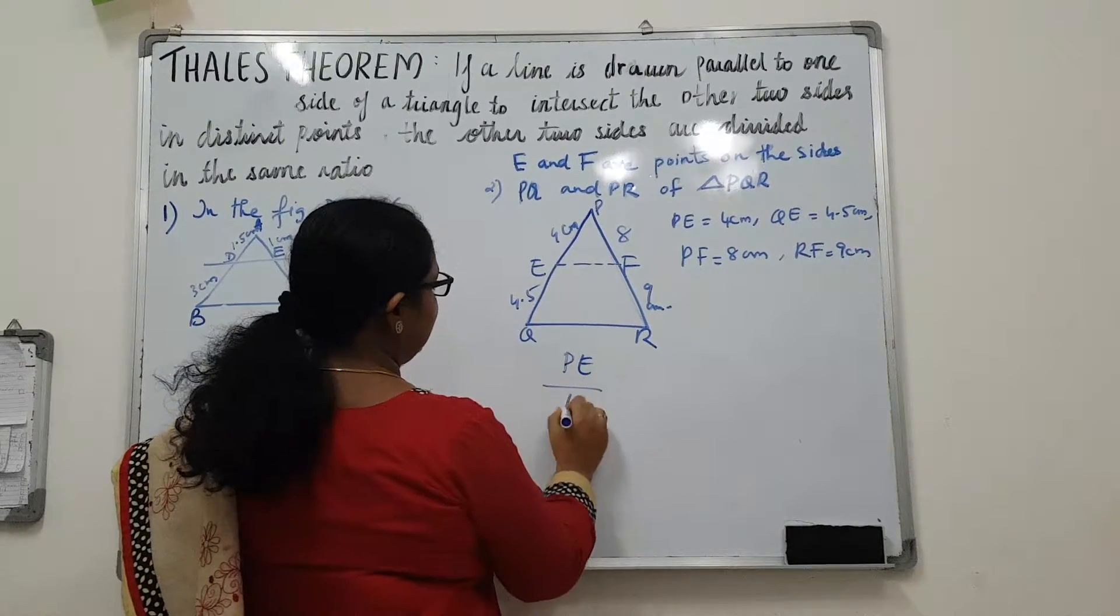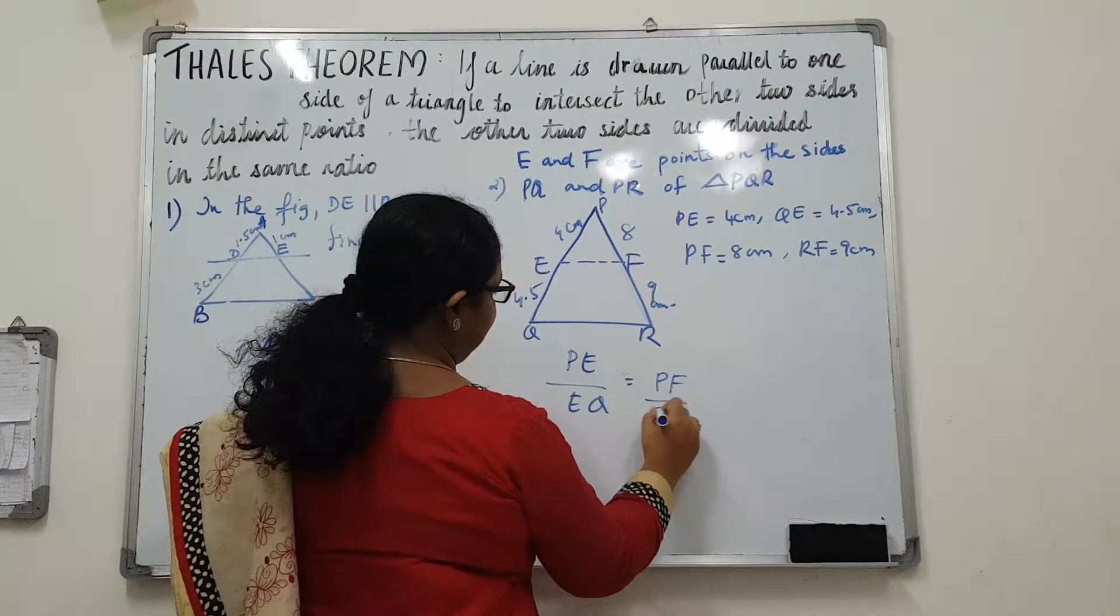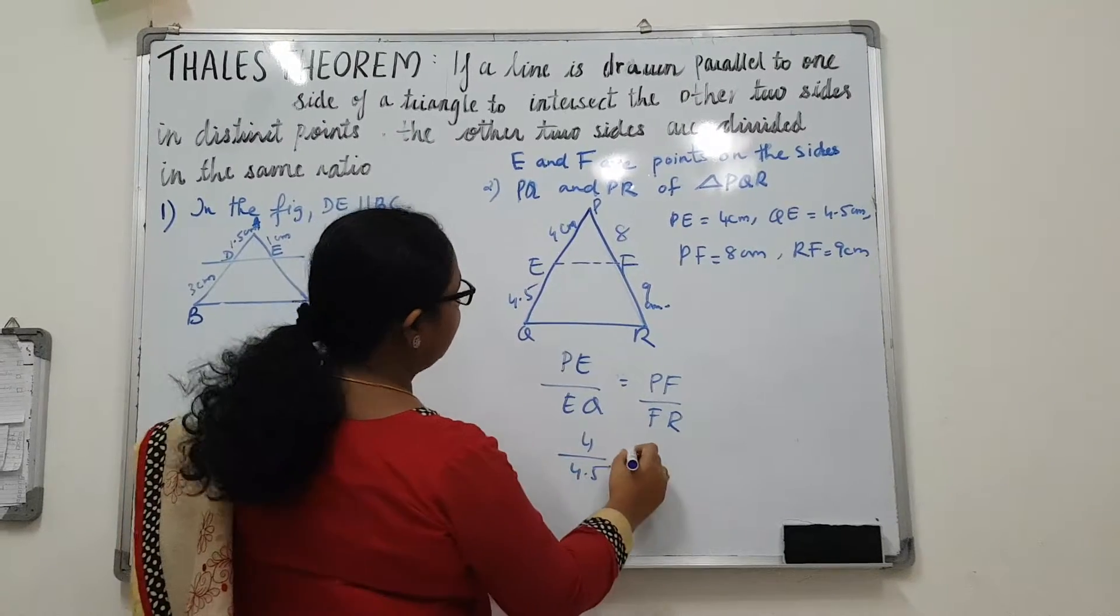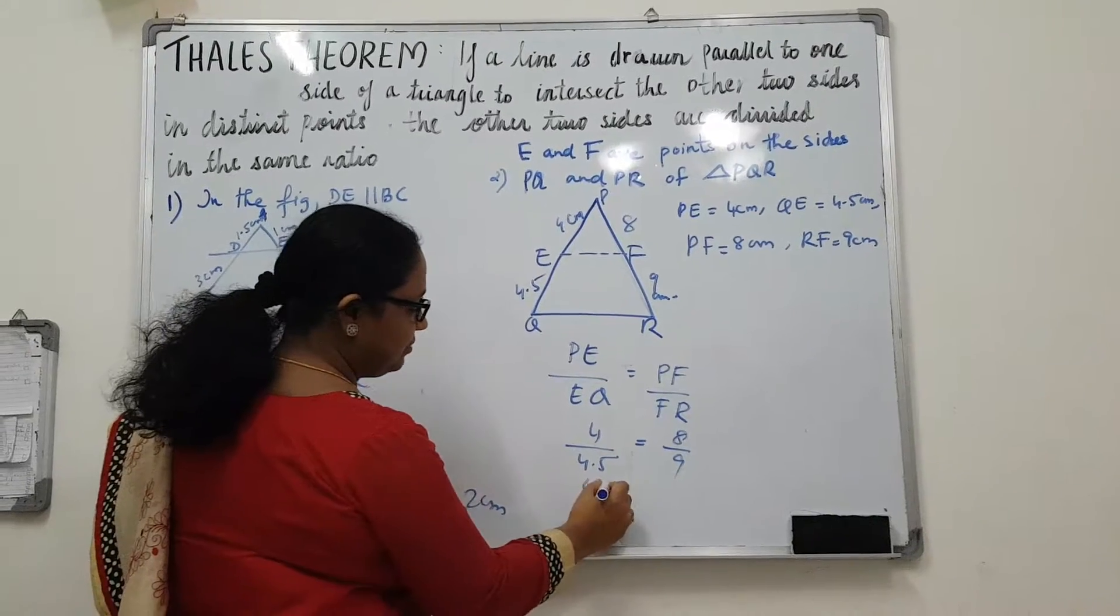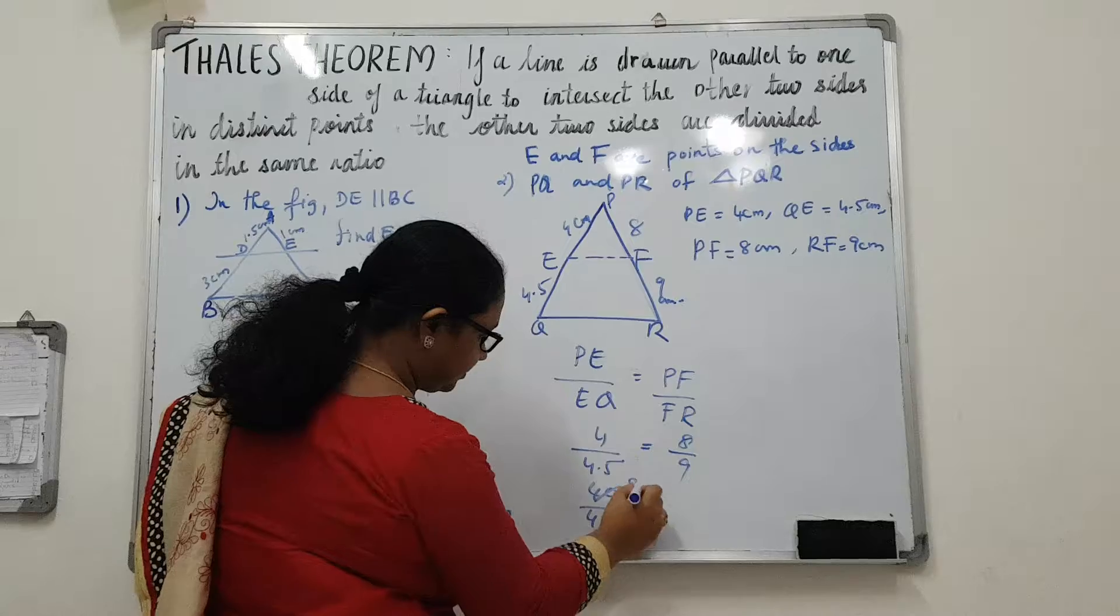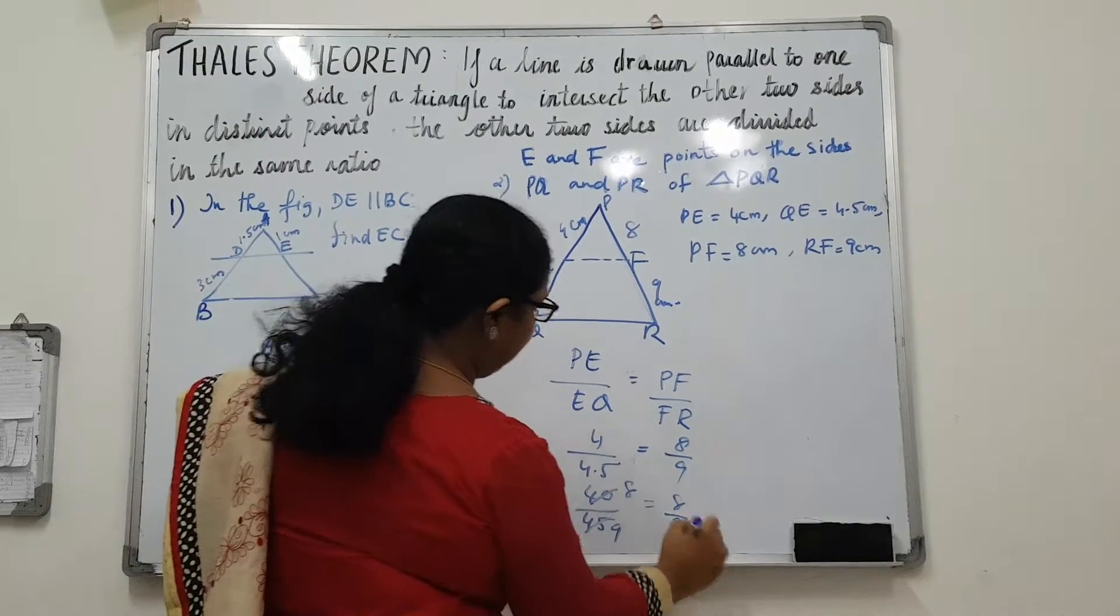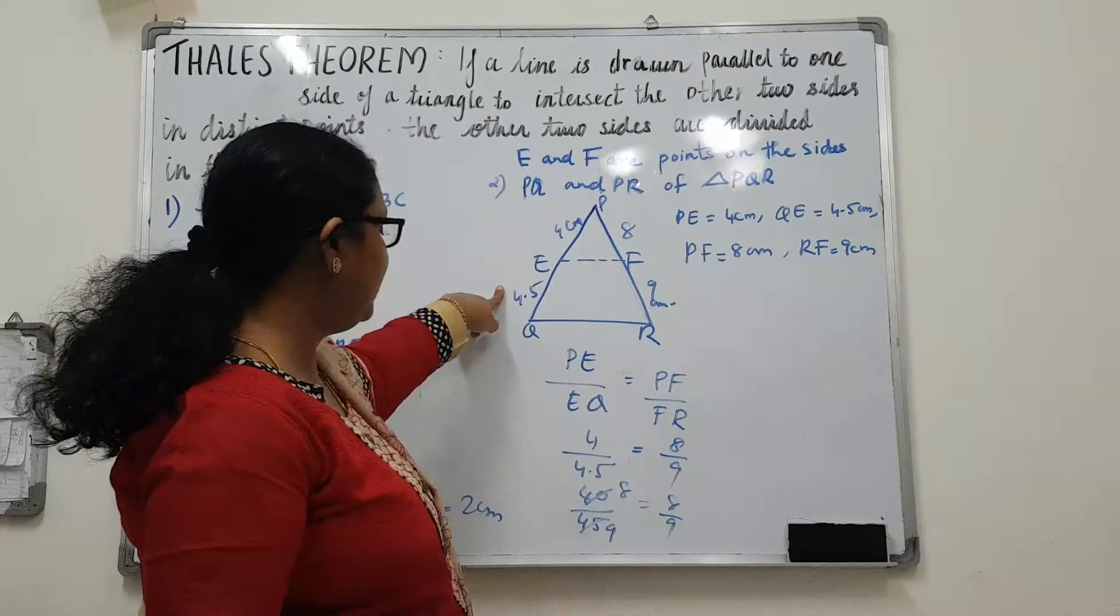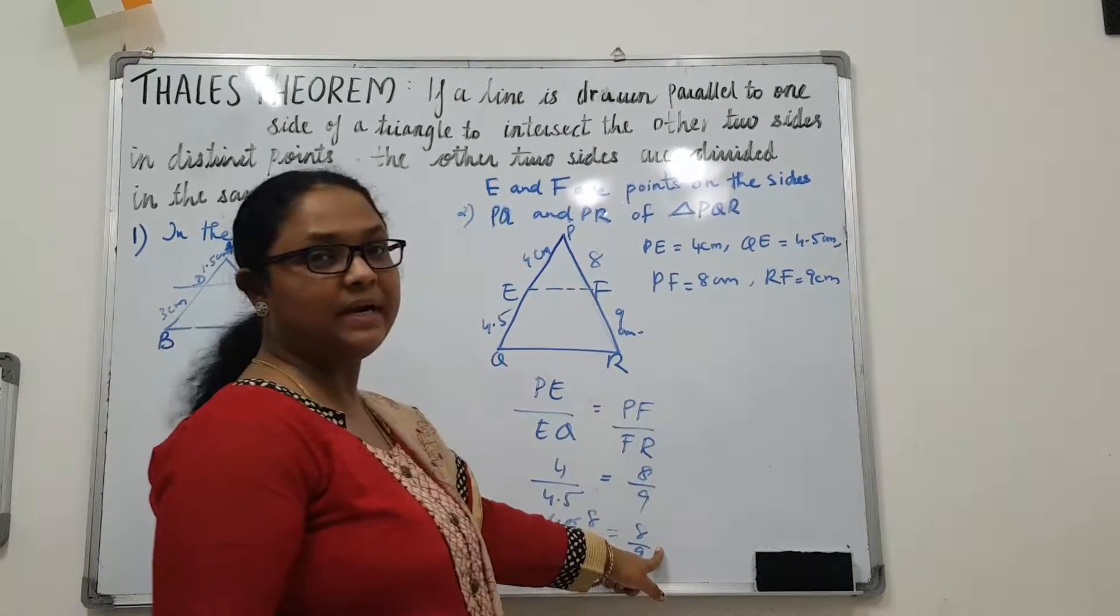PE by EQ is equal to PF by FR. PE is 4 and EQ is 4.5 is equal to 8 by 9. So we can see that this can be written as 40 by 45 which is same as 8 by 9. So both we are getting as 8 by 9. So these two ratios, that is PE by EQ is 8 by 9 and PF by FR is also 8 by 9.